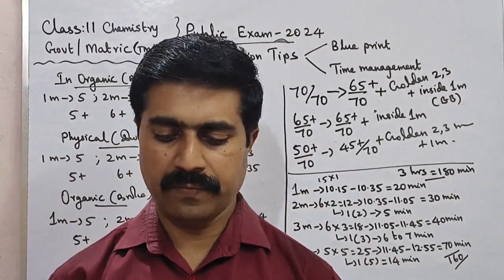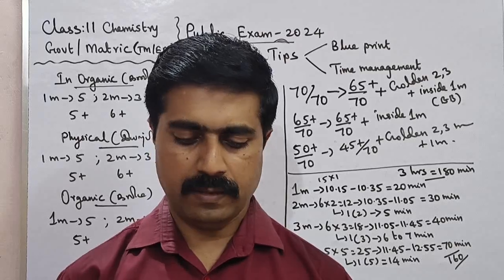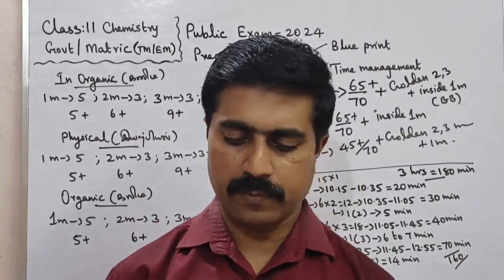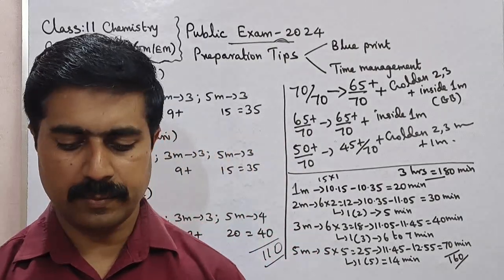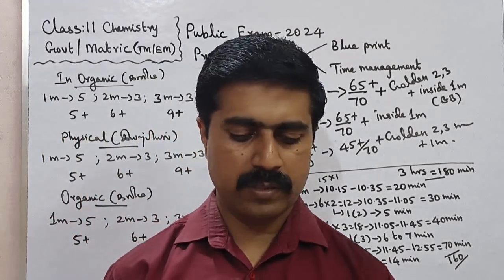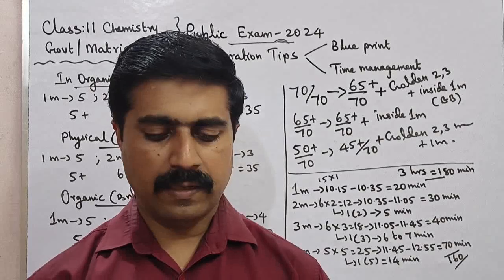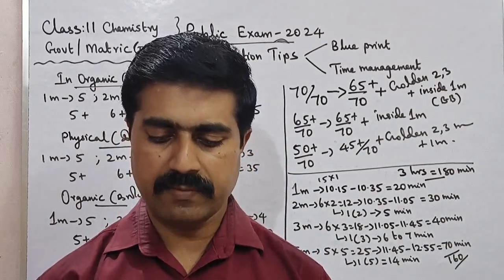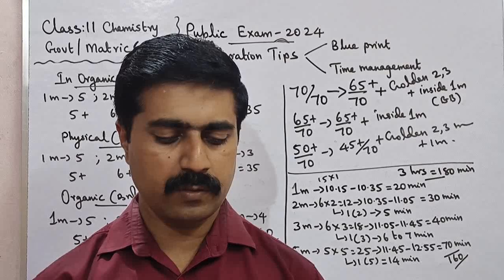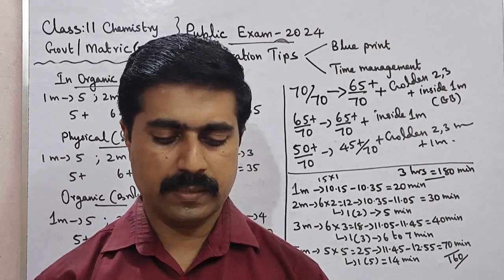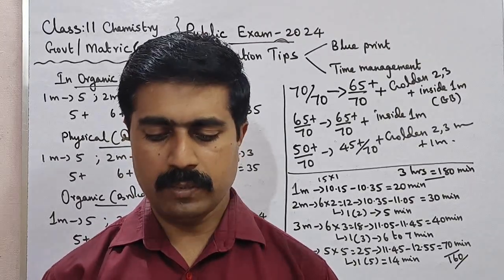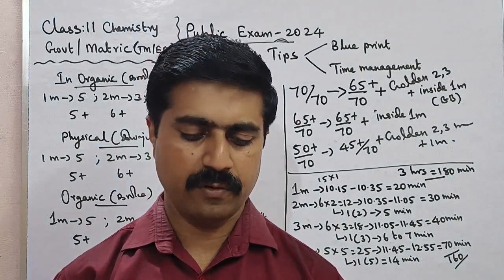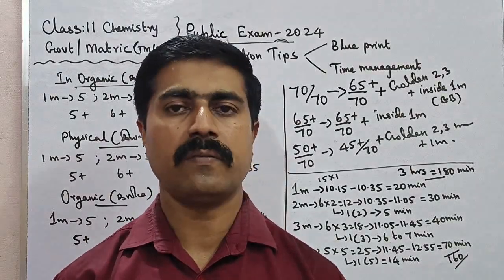Question 23: Differentiate tubectomy from vasectomy. Lesson 3, book inside, topic number 3.4. Question 24: What is kala-azar? Lesson 7, book bag, question number 22. Question 25: What is haplodiploidy? Lesson 4, book bag, question number 25.